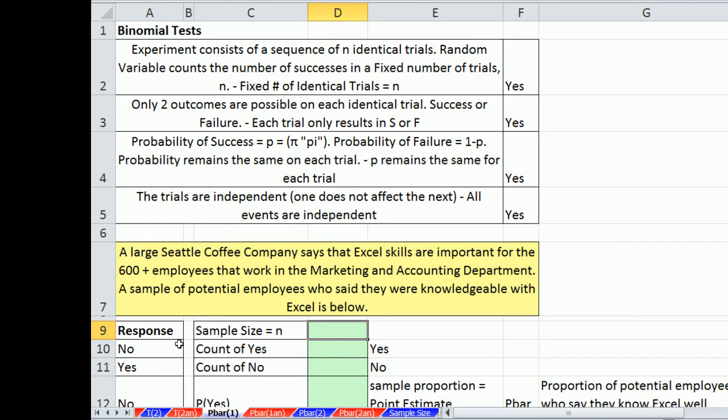So let's think about this. This is a binomial experiment. This is a nominal variable, and there's two possibilities.